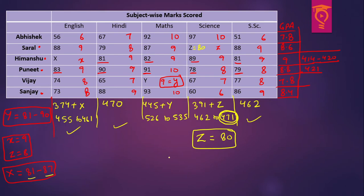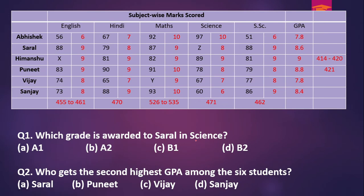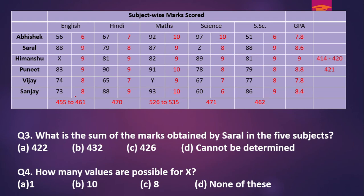So capital Z is uniquely 80. Capital X still has seven possible values and capital Y still has 10 possible values. Now for the questions: the first question — which grade is awarded to Saral in science? Small z is 8, and 8 corresponds to grade B1. Second question — who gets the second highest GPA? That is Puneet. Third — what is the sum of marks obtained by Saral in five subjects? We add 88 plus 79 plus 87 plus 80 plus 88 and get 422. The last question — how many values are possible for capital X? There are seven possible values, so the answer is none of these.